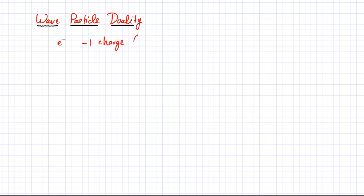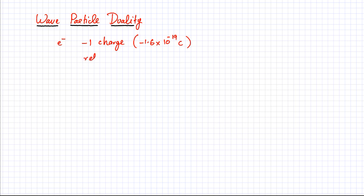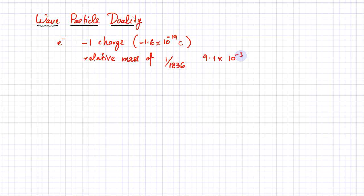The actual charge on an electron is minus 1.6 × 10⁻¹⁹ coulombs. It also has a relative mass of 1, which means its mass is 1/1836 compared to a proton or neutron. The actual mass of an electron is approximately 9.1 × 10⁻³¹ kg. When we talk about relative mass, that's the mass compared to a proton or neutron.